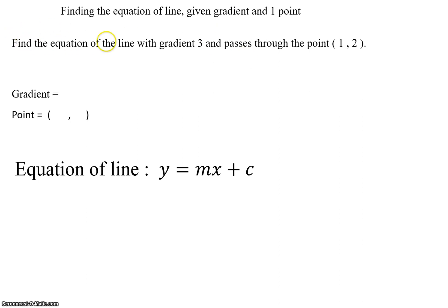Let's use this as a simple example. Find the equation of a line with gradient 3 that passes through the point (1, 2). What we do is we're going to use this equation y = mx + c to do it.